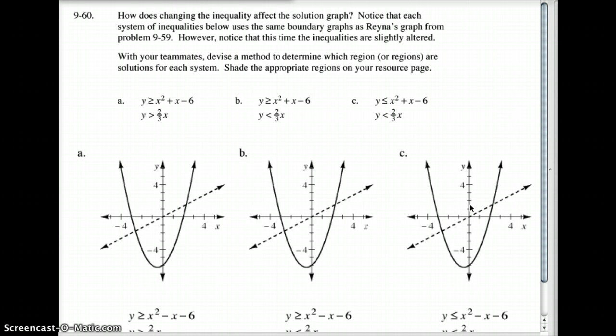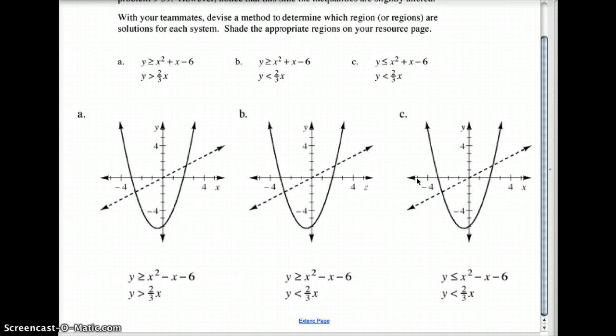I'm assuming you've paused and graphed it. Y is greater than means it's shaded above, so the inside of this is shaded. Y is greater than two-thirds, so it's above the line. This section would be your shaded portion. The second one, y is greater than, so we're shading the inside of the parabola. But y is less than two-thirds means below the line. So the only part shaded by both would be this little interior portion.